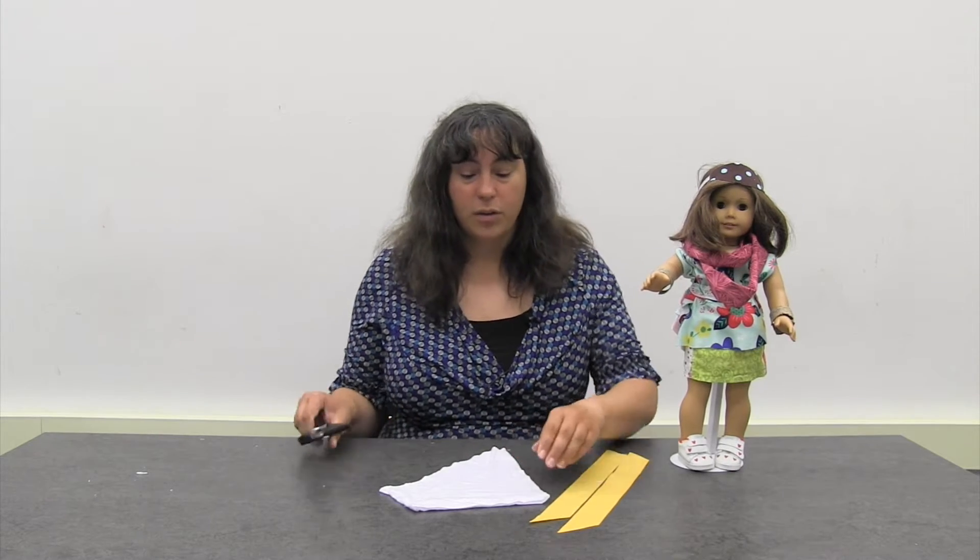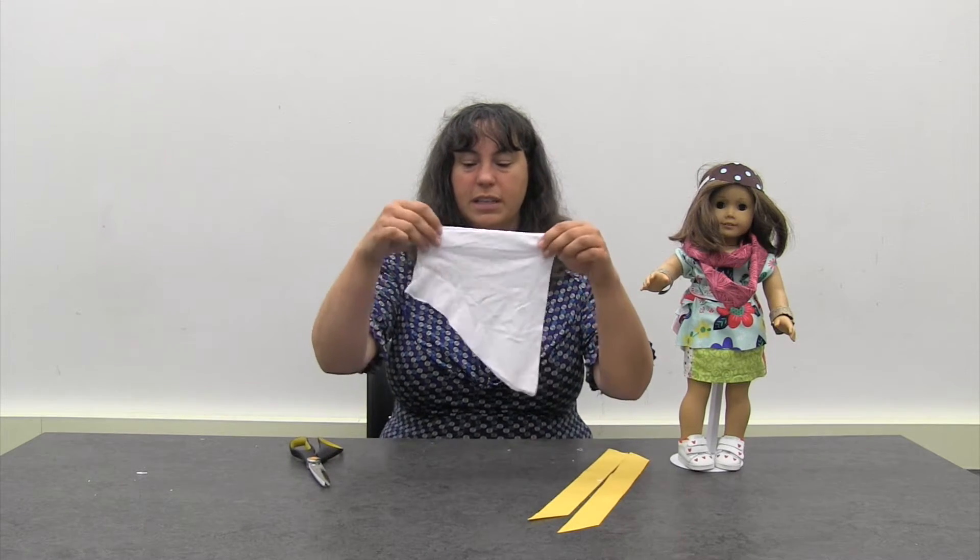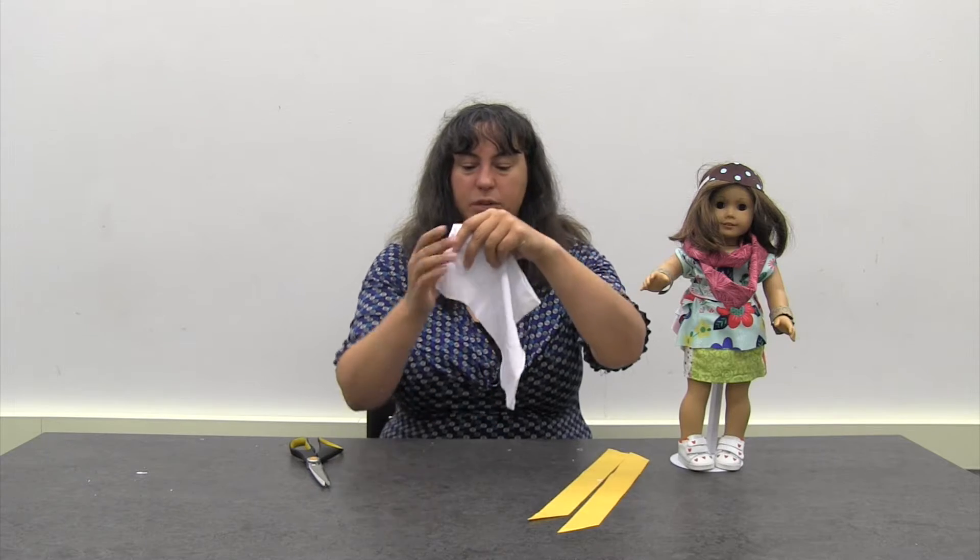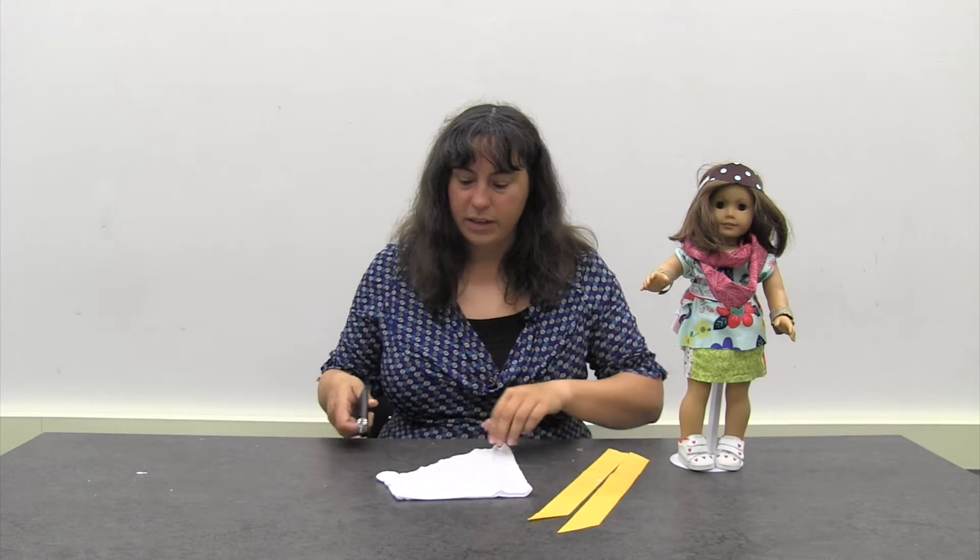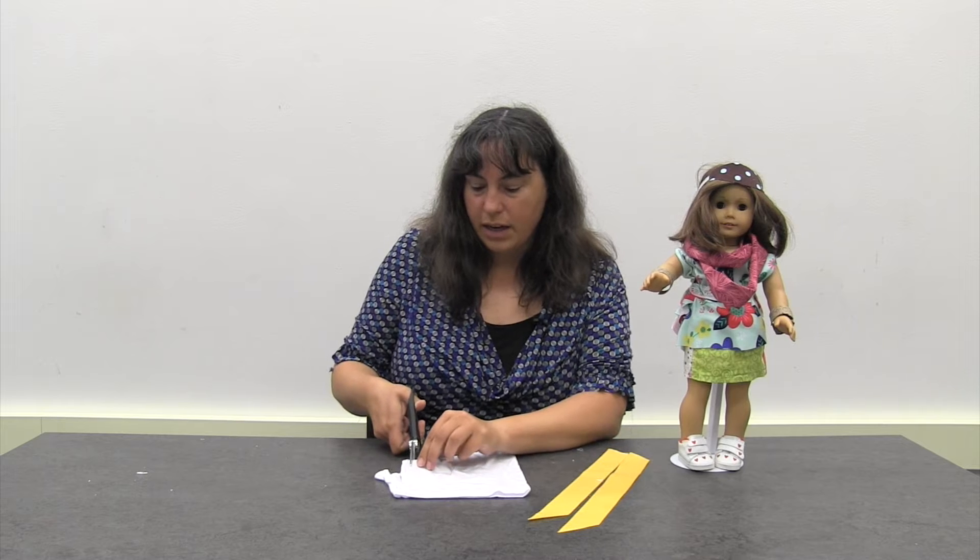So first off, we have this pretty sleeve with this nice pretty little fringe line. What we're going to do is we're going to start at the shortest end and we're going to just make some cuts. And what we want to do is make all of our cuts all the way up to that original cut line.